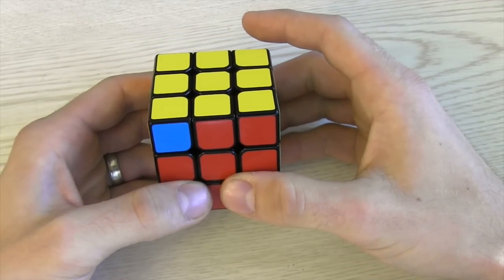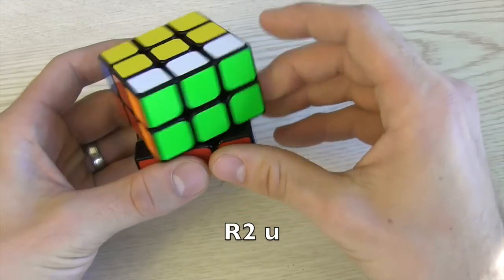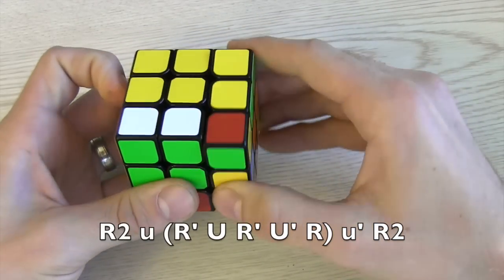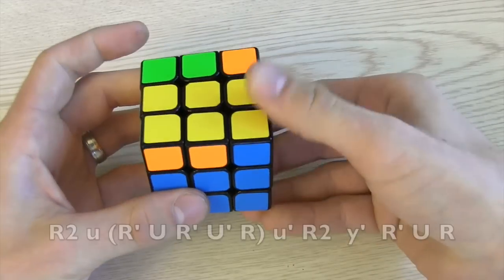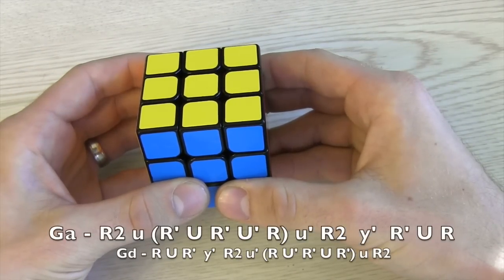You pretty much do the exact opposite where you start with R2 in a small U move with R2 small U then R prime U R prime U prime R followed by small U prime R2. Then again you turn to where the headlights were and do R prime U R. It is literally the reverse of the first algorithm we did.